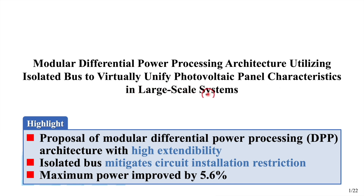In recent years, large-scale photovoltaic systems such as mega solar have been developed and commercialized around the world. However, partial shading issues trigger a significant reduction in power generation.